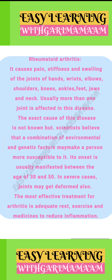In rheumatoid arthritis, usually more than one joint is affected. The exact cause of this disease is not known, but scientists believe that a combination of environmental and genetic factors may make a person more susceptible to it. Its onset is usually manifested between the age of 30 and 50. In severe cases, joints may get deformed. The most effective treatment for arthritis is adequate rest, exercise, and medicines to reduce inflammation.